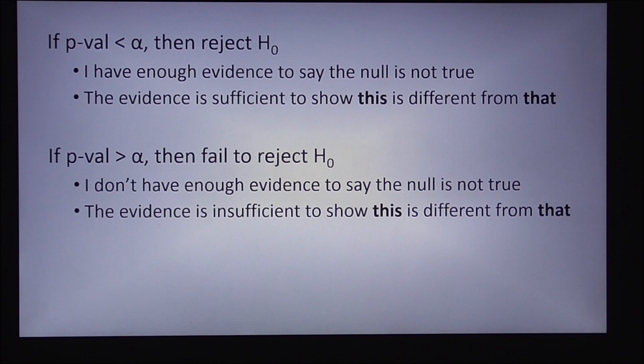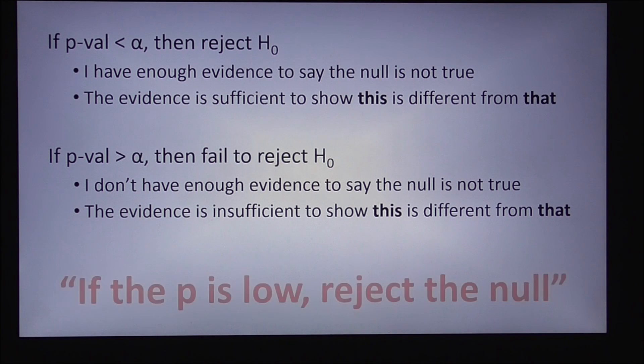I guess the most important thing to remember about the p-value and alpha is that if the p is low, reject the null. And that's a good mnemonic device also. This has been a very brief discussion of type 1 and type 2 errors and alpha and beta. Thanks for watching.